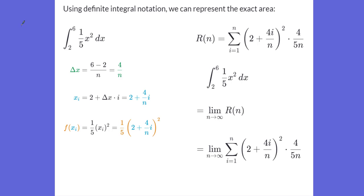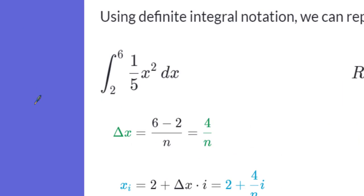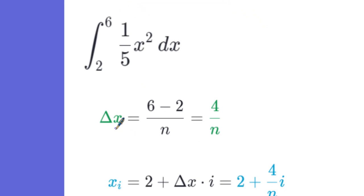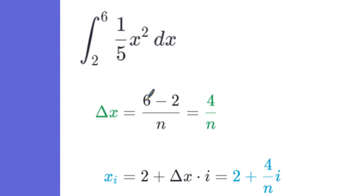Let's walk through what this looks like. Our function is (1/5)x² and we're finding the area from 2 to 6. Delta x equals our upper limit minus our lower limit — 6 minus 2 — over the number of rectangles n, so delta x equals 4/n.